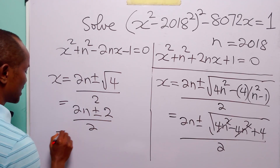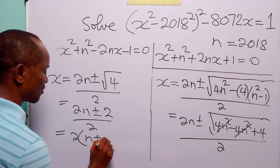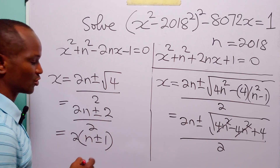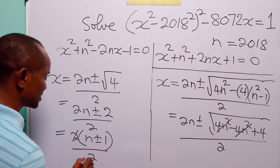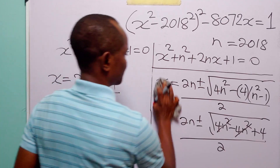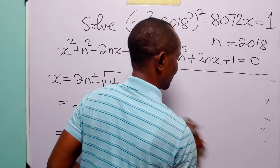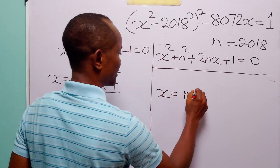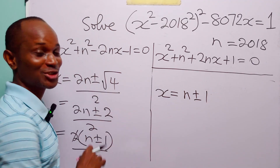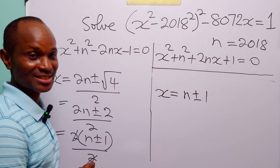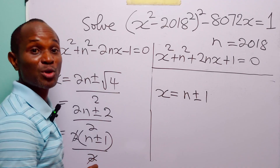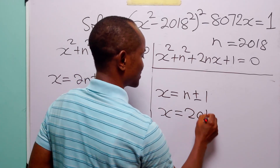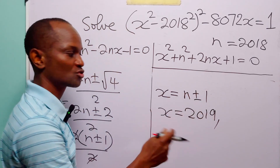This simplifies to 2(n ± 1) / 2 = n ± 1. I told you the solution would be satisfying! So x = n ± 1, meaning x = 2018 + 1 = 2019 or x = 2018 − 1 = 2017.